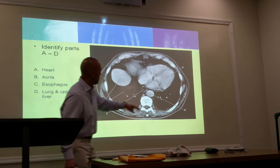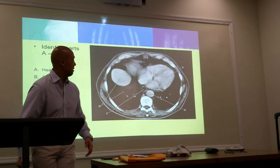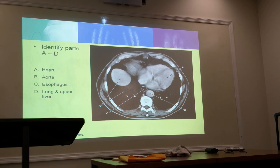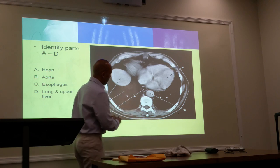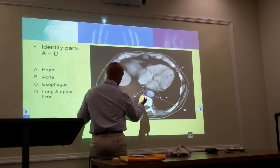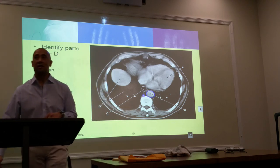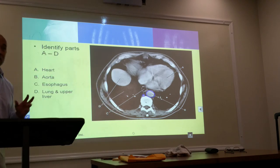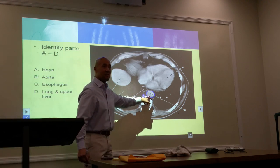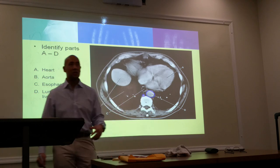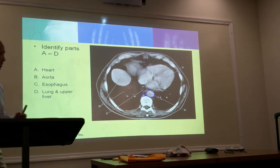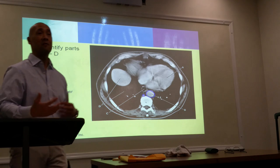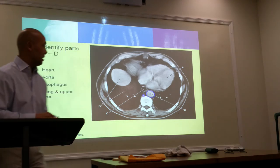Over here we have B. The aorta — all the gray vessels. And then C is the esophagus. So this is the aorta. What is this? It's also a great vessel — the vena cava. The aorta is going to be a lot bigger than the vena cava. The aorta is larger because it has to withstand the high pressure coming from the left ventricle, and it's responsible for pumping great amounts of blood outside of your heart and into your body.